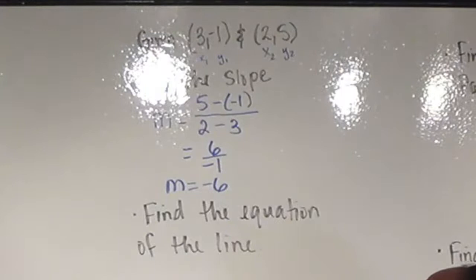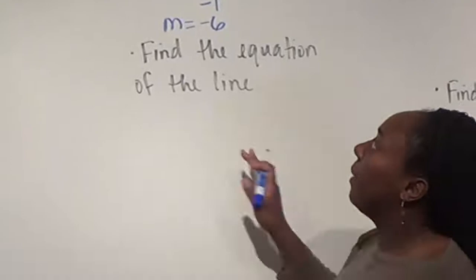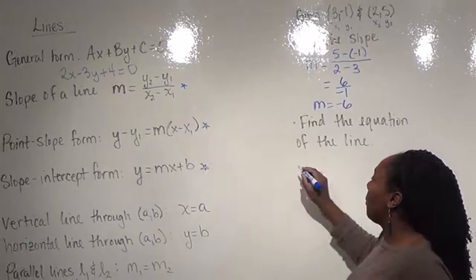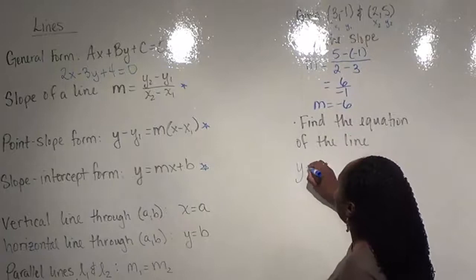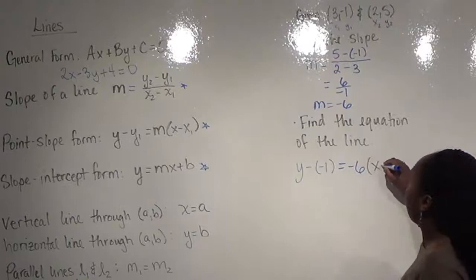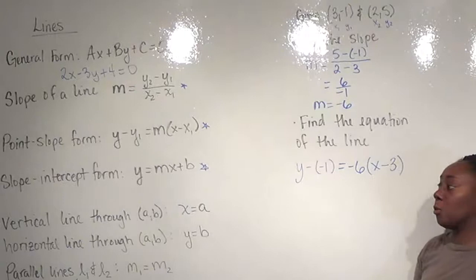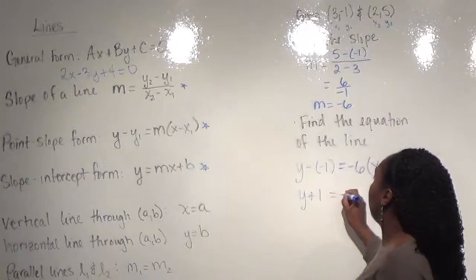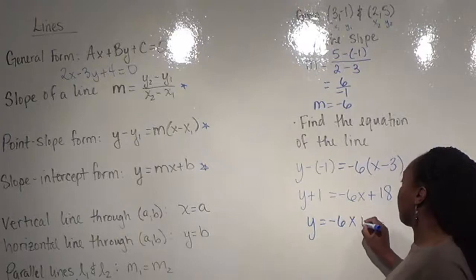Once we have the slope, we can find the equation of the line — we just need a point and a slope. We're given two points, so pick either one; I'll use the first point. Putting it into point-slope form: y minus y₁ equals slope times (x minus x₁). That's not very clean, so we simplify: y plus 1 equals negative 6x minus 12, then subtracting 1 gives us y equals negative 6x minus 13 in slope-intercept form.